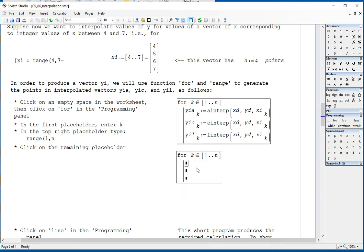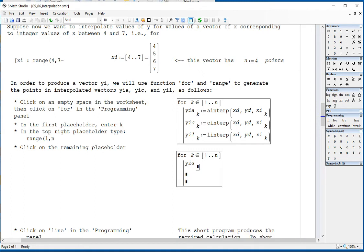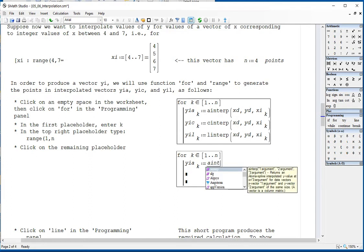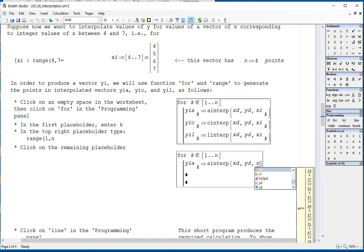So you drag that down to produce the three entries, and then you start typing. I'm going to do it with yi, a, bracket, k, spacebar, column, a interp, xd, yd, which are my reference vectors, and then xi, bracket, k.